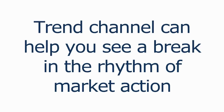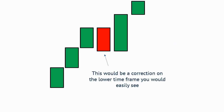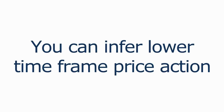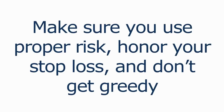Add a trend channel to help you see the break in the rhythm of market action. Look for a strong move against the previous direction and then a weak pullback — this pullback might need to be inferred from the higher timeframe unless you drop to a lower timeframe to see the action. A single red candle in a sea of green is a pullback on the lower timeframe. Make sure you use proper risk on your stop loss and don't get greedy. Thanks for watching — hit the subscribe button.